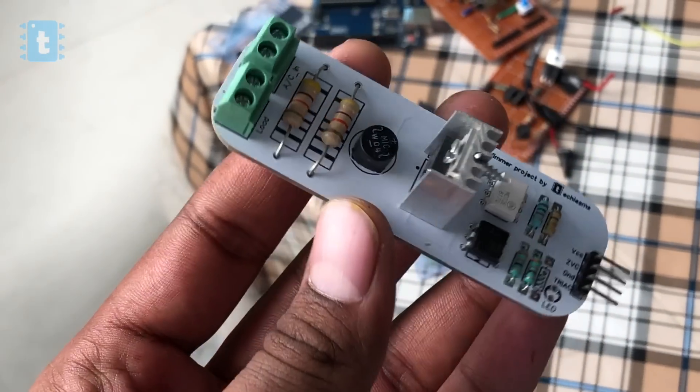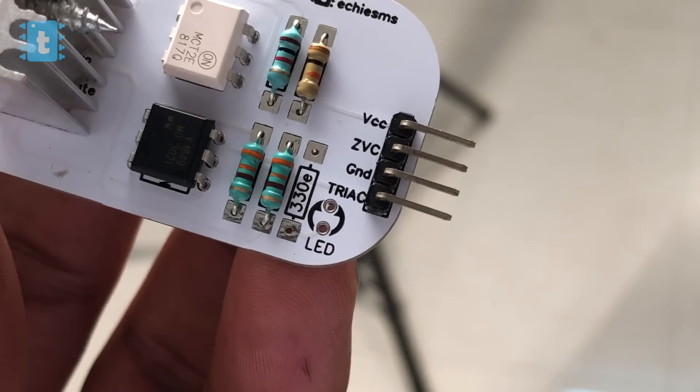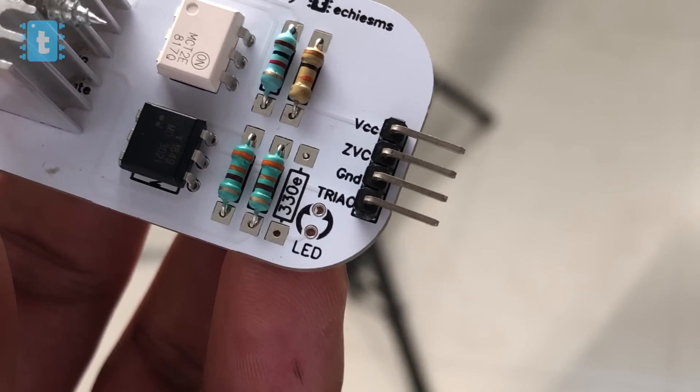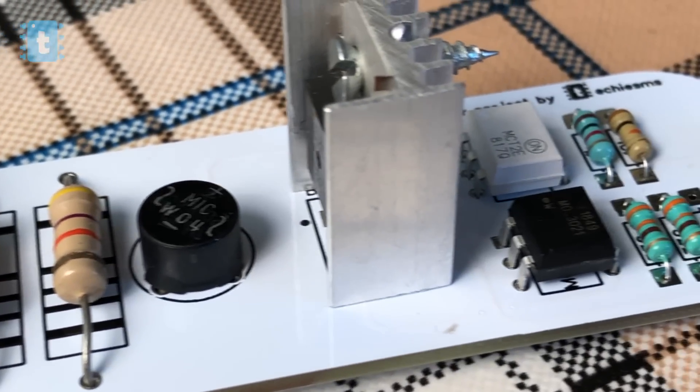Now you'll notice I haven't soldered a resistor and LED here on the PCB. I have used this for testing the zero voltage crossing indication. So if you don't solder it then also the project will work perfectly.